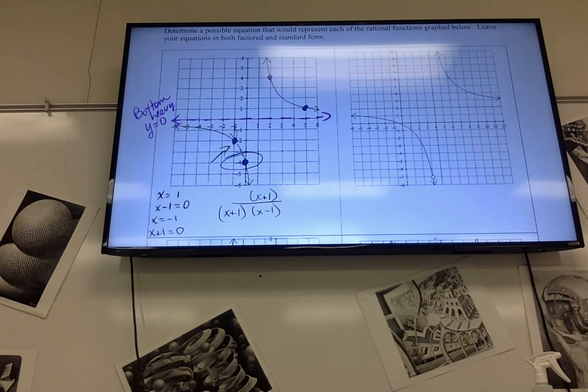So right now, the constant terms that I have, I have a 1 on the bottom, and if I multiplied these on the bottom, 1 times negative 1, I'd have a negative 1. And that's supposed to be my y intercept.